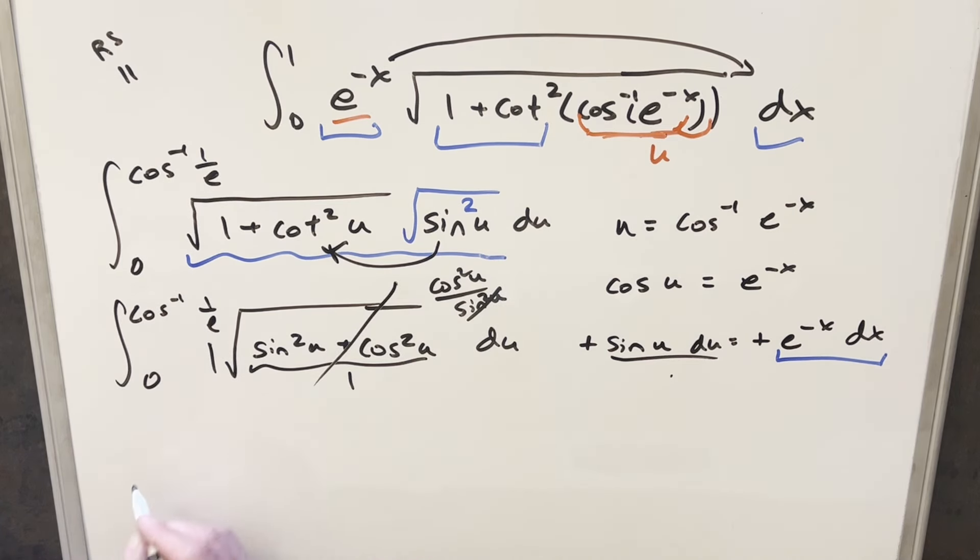So now we'll just go ahead integrating one. This is going to give me u. And we just need to evaluate this from zero to this crazy thing, arc cosine one over e. But when we evaluate at zero, we're just going to get zero. So all I need to do is plug this in. And so for my final solution to this, we just get arc cosine one over e.